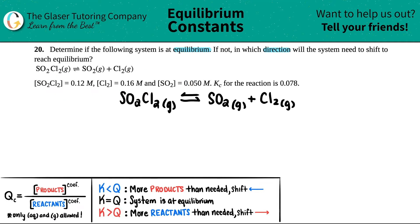Next thing I'm going to do is write out the concentrations they gave me. For SO₂Cl₂ they said I have 0.12 molarity. For Cl₂ I got 0.16 molarity, and for SO₂ I have 0.050 molarity.